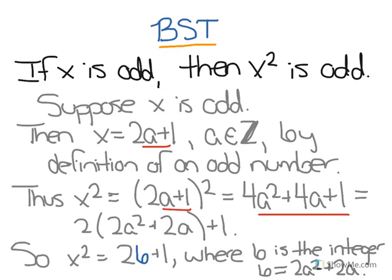Then we can say that x squared actually equals 2b + 1, because all of this we can just represent as b, because it's an integer. 2a² + 2a is going to equal an integer by the closure property.